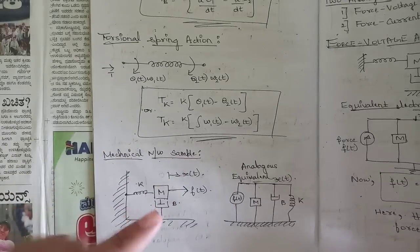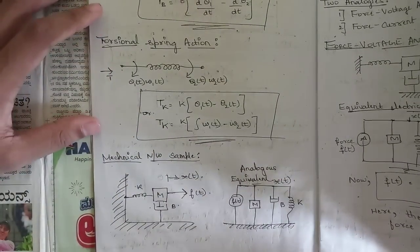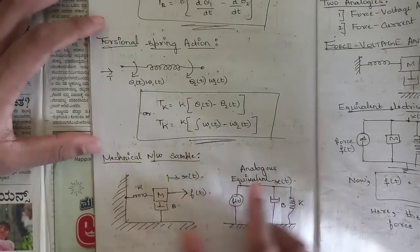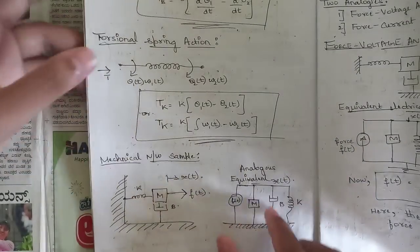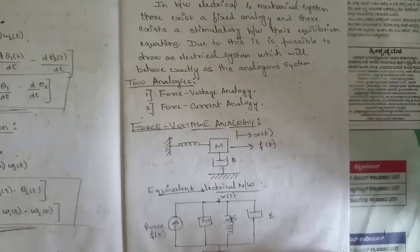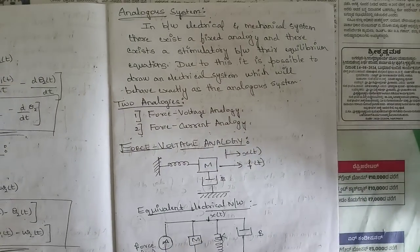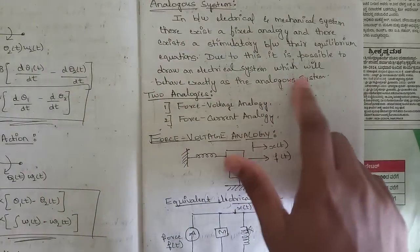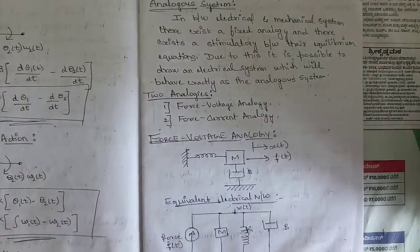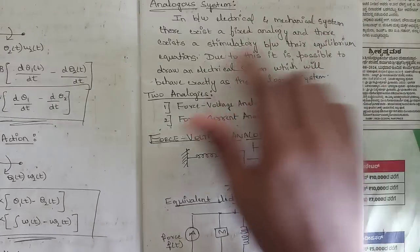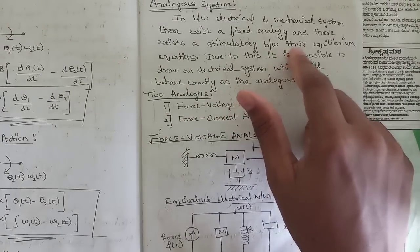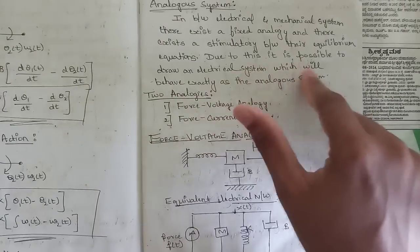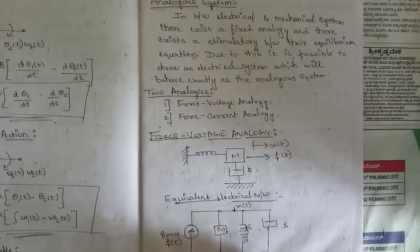This is a simple mechanical network — how to convert a mechanical system into an analogous equivalent circuit. By taking displacement as a single node, all components present under that displacement are written in parallel. We discussed two kinds of analogies for analogous systems: force-voltage analogy and force-current analogy. Between electrical and mechanical systems there exists a fixed analogy based on similarity between their equilibrium equations.